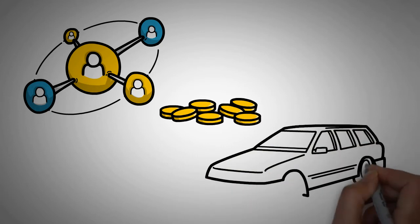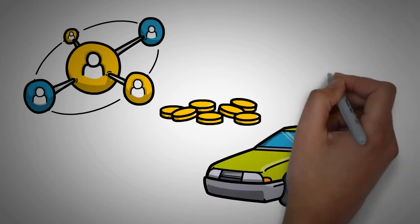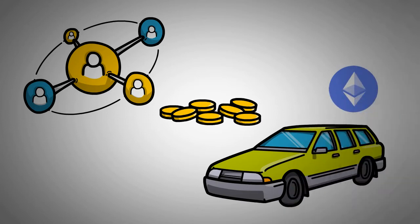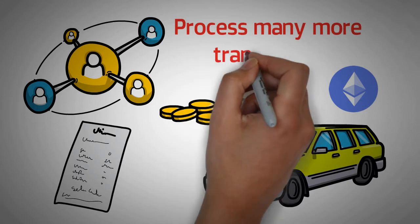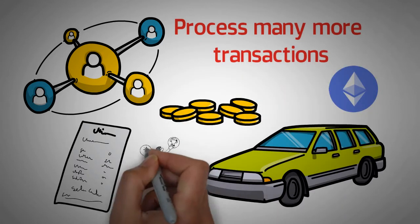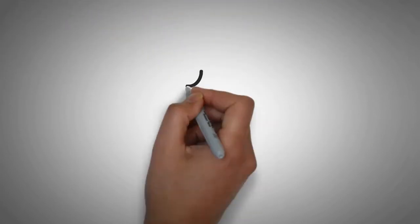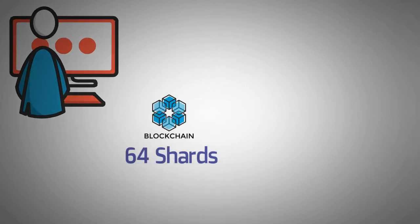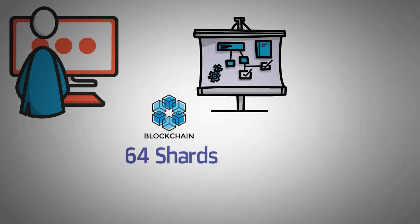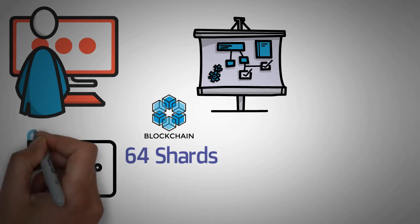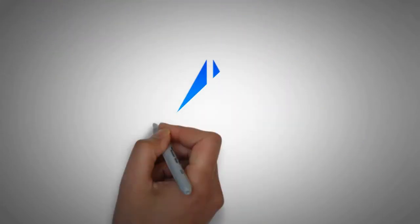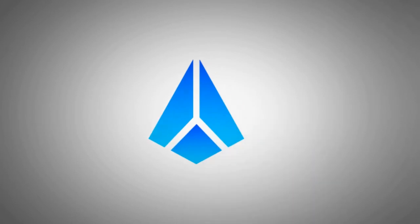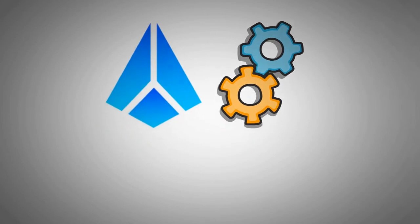Ethereum sharding is a process by which the Ethereum network can be divided into multiple shards, each of which can process transactions in parallel. This would theoretically allow for the network to process many more transactions than it can now. This would involve splitting up the blockchain into multiple pieces, each of which can be processed independently. The creator of Ethereum has proposed that the blockchain would be split into 64 shards. This might sound like a small number, but it could greatly scale Ethereum in the long run. In fact, Buterin also stated that Ethereum could theoretically be scaled to 1024 shards in the future. This shows a lot of potential for upcoming upgrades. Sharding is a complex process, and it will take some time to implement, but once it is implemented, it has the potential to greatly improve the Ethereum network.